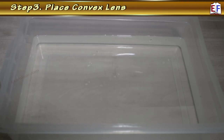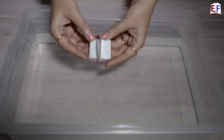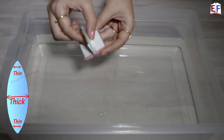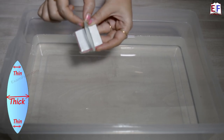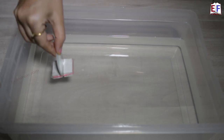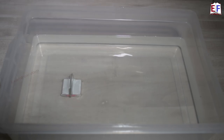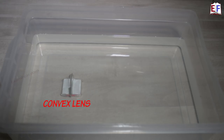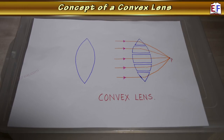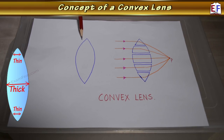Now we take the convex lens and put it in the lens holder. Just to remind you: the convex lens is the one with tapered, thinner ends and thick in between. We place this lens inside the container, and now our setup is ready.